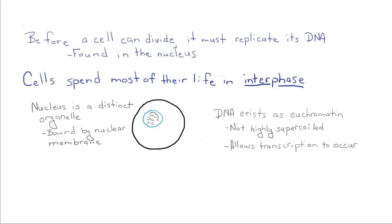DNA exists as euchromatin, which is just long, stringy strands of DNA. It's not very coiled, and it allows for transcription or the reading of DNA to occur, so the cell can synthesize proteins and other molecules it needs to grow and function.